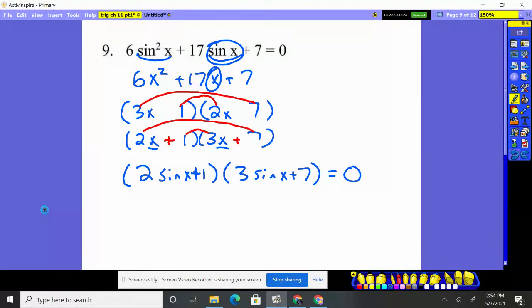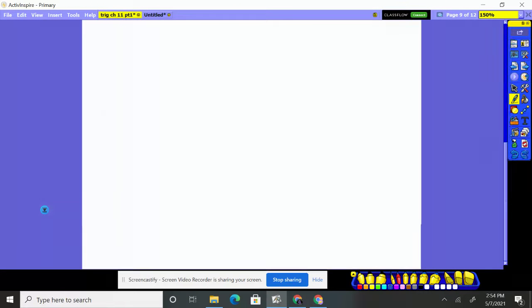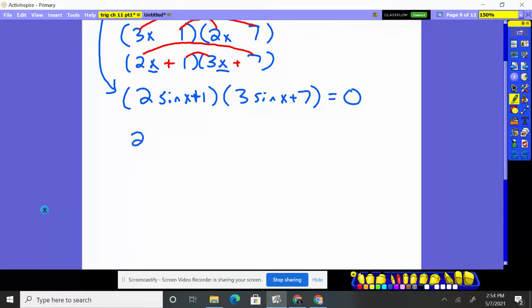So now, here's what we did. We factored this guy down to here. So we now want to set each of the pieces equal to 0. So I'm going to say, 2 times the sine of x plus 1 is 0 or 3 times the sine of x plus 7 is 0.